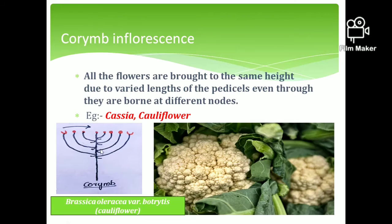In this figure you can see the corymb type of inflorescence. The flowers are arranged on the peduncle at different nodes, but all flowers reach the same height. This type of arrangement is seen in cauliflower and Cassia. The scientific name of cauliflower is Brassica oleracea botrytis.